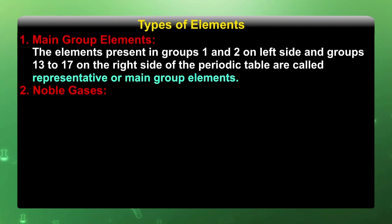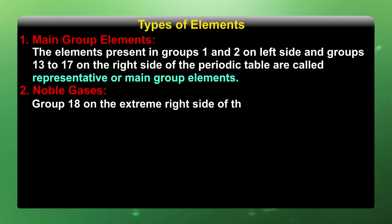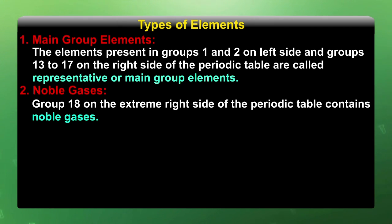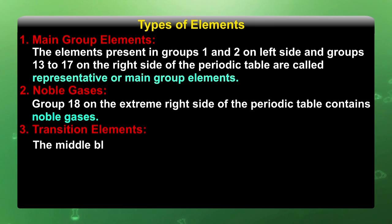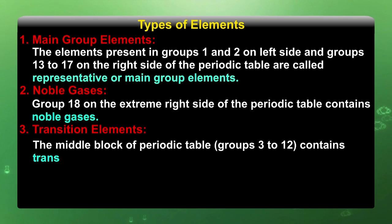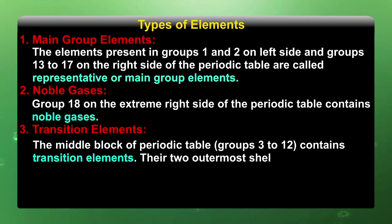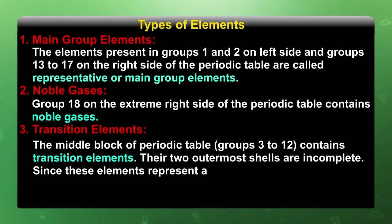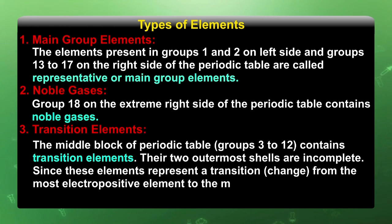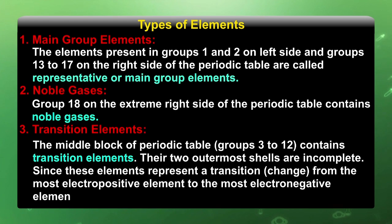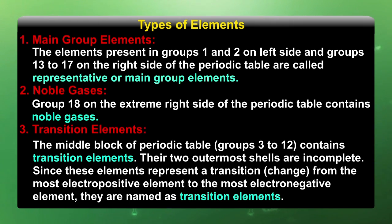Noble gases: group 18 on the extreme right side of the periodic table contains noble gases. Transition elements: the middle block of the periodic table, group 3 to 12, contains transition elements. The two outermost shells are incomplete. Since these elements represent a transition — a change from the most electropositive element to the most electronegative elements — they are termed as transition elements.